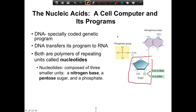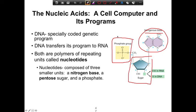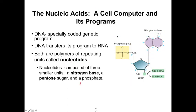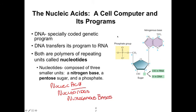Nucleotides are composed of three smaller units: a pentose sugar at its center, a phosphate group, and a nitrogenous base. I use the 'order of N's' to keep these straight — nucleic acids are bigger than nucleotides, which are composed of nucleotides, and nitrogenous bases are smaller still. So we have an order of magnitude with these three N words: larger, smaller, and smaller still.